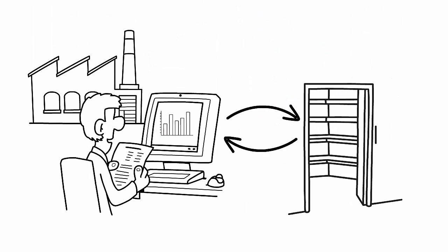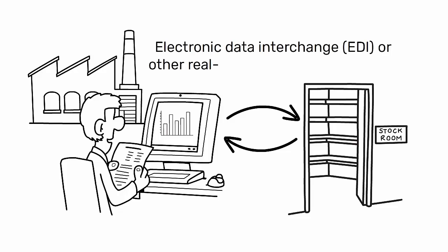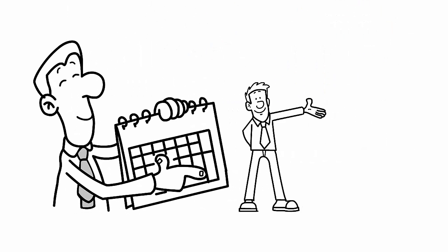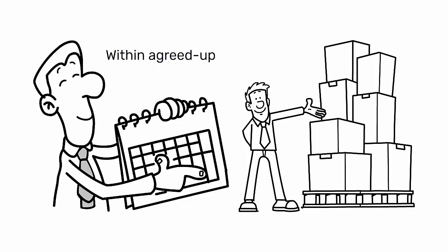In a VMI partnership, the vendor monitors the buyer's inventory levels, often through electronic data interchange, EDI, or other real-time data sharing methods. The supplier makes decisions on when to replenish stock and how much to send within agreed-upon parameters.